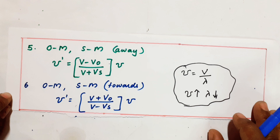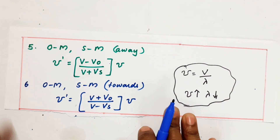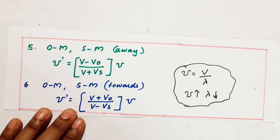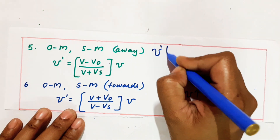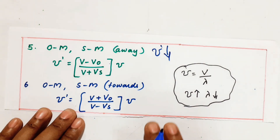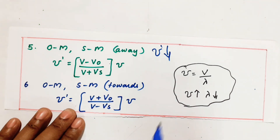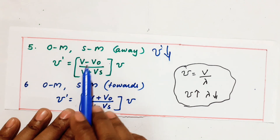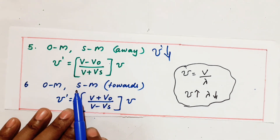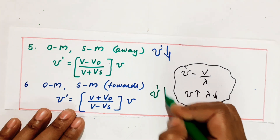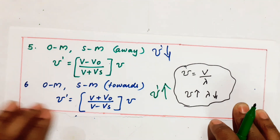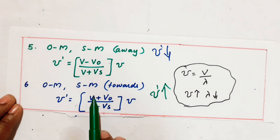Now the last case: observer moving and source also moving, both moving away. Away means apparent frequency should decrease — numerator connects with minus, denominator connects with plus. If both are moving towards, apparent frequency should increase — numerator connects with plus, denominator connects with minus.